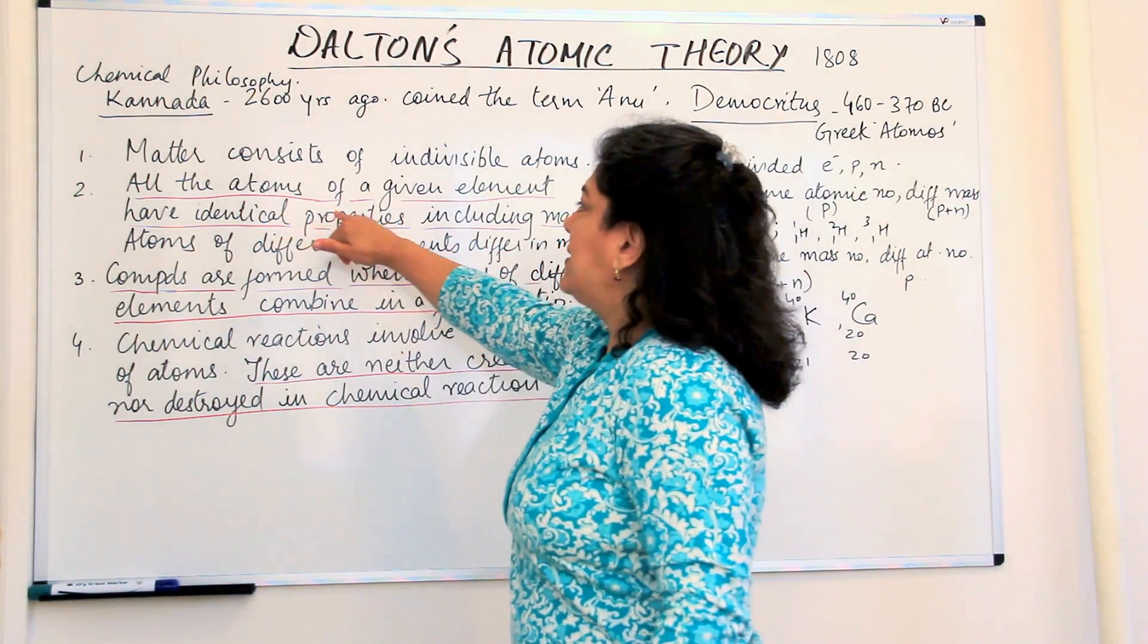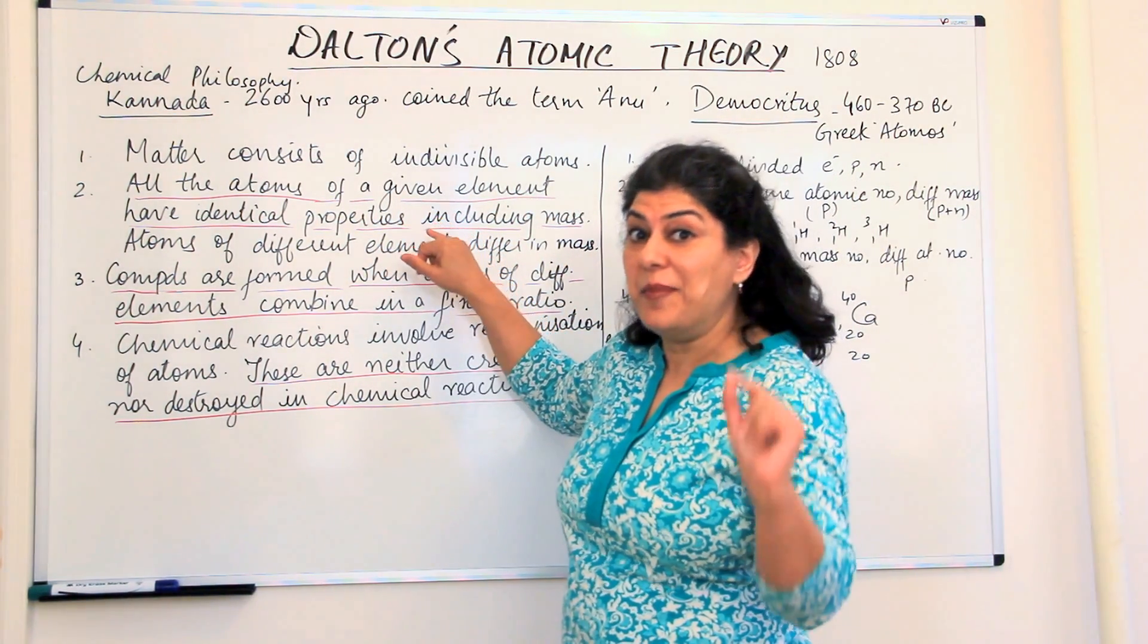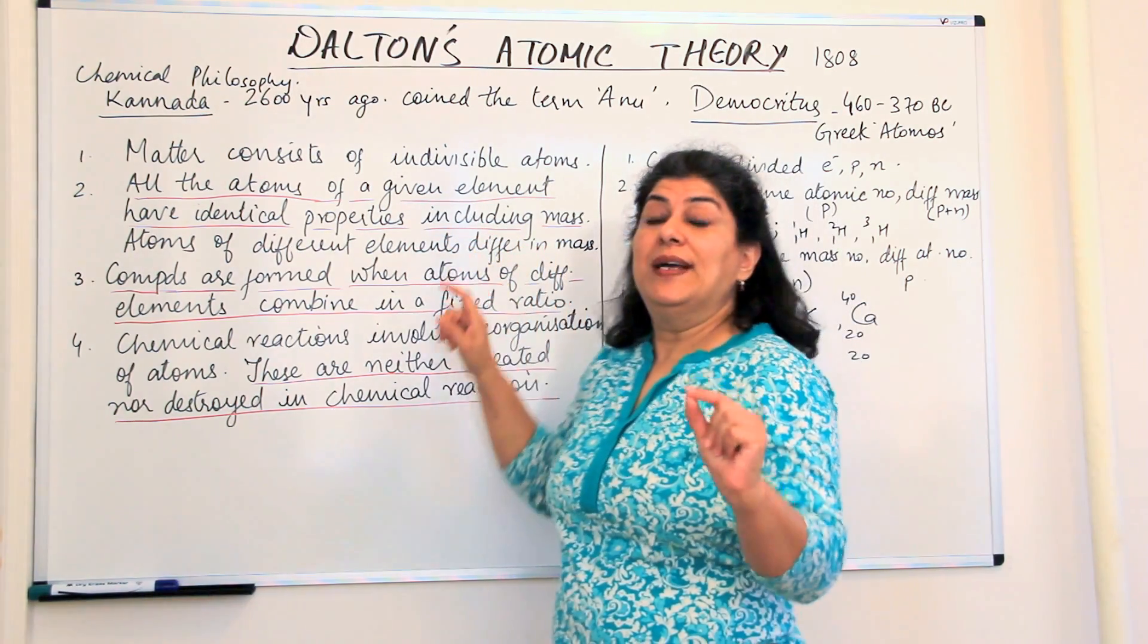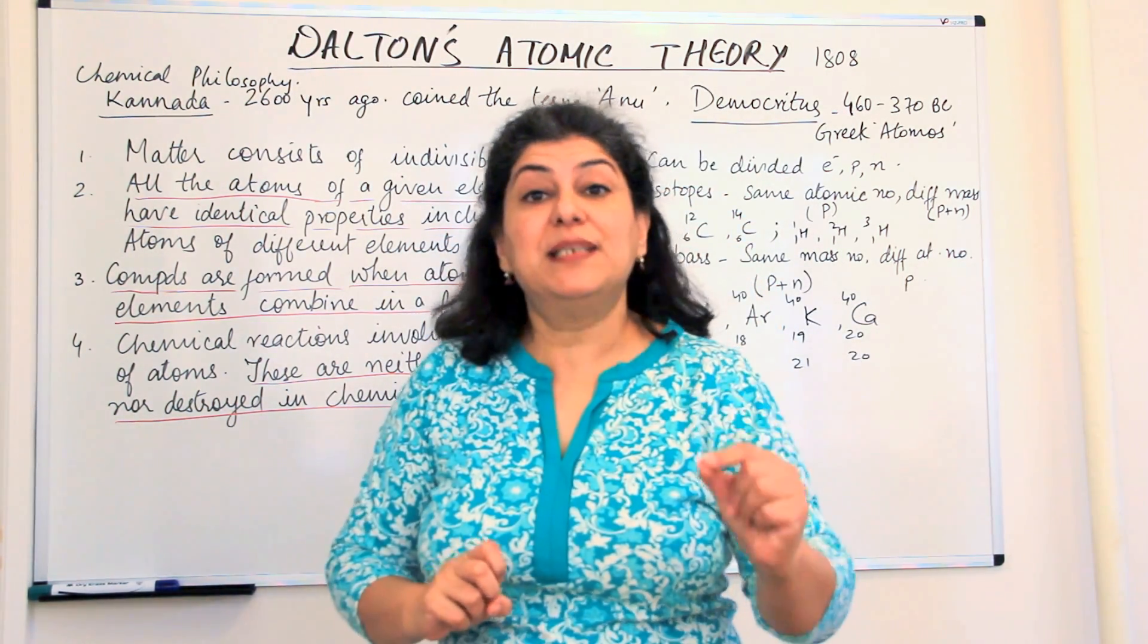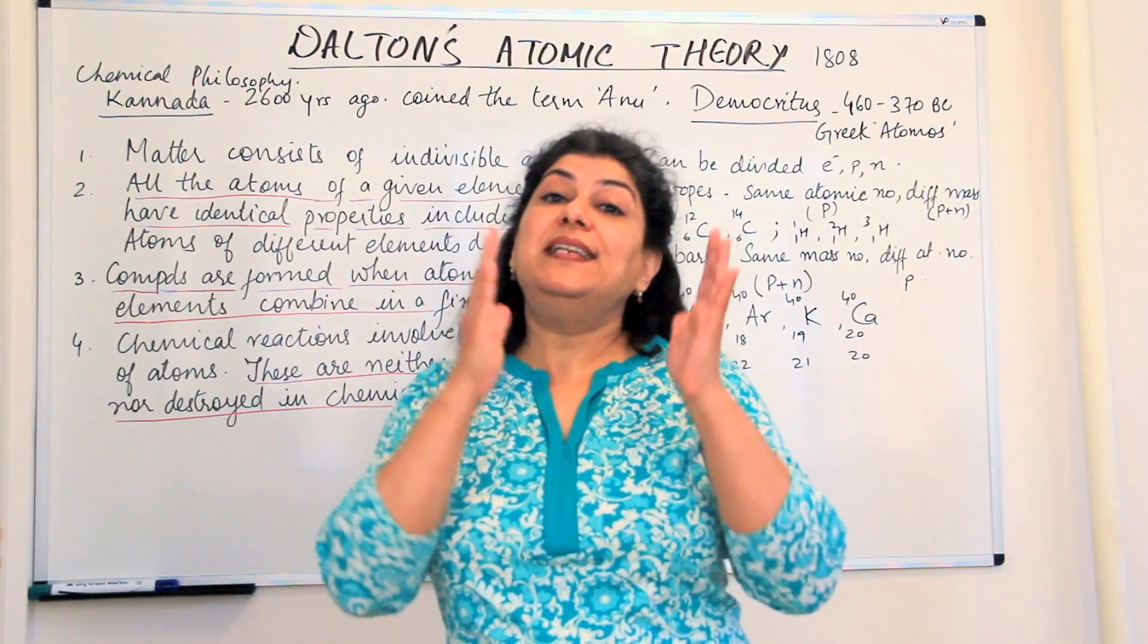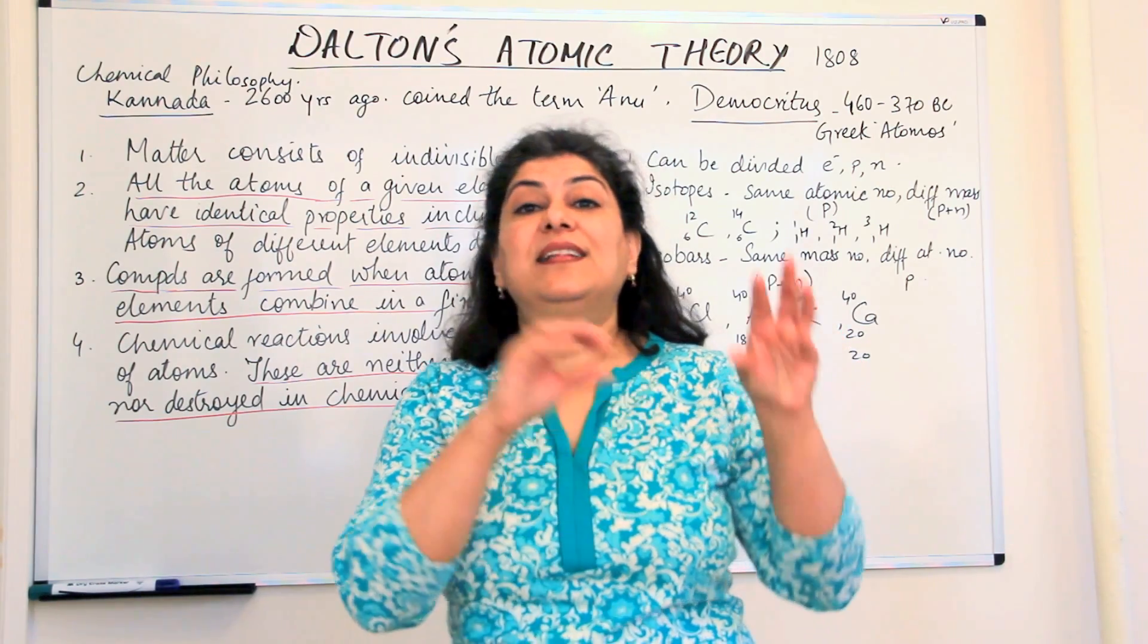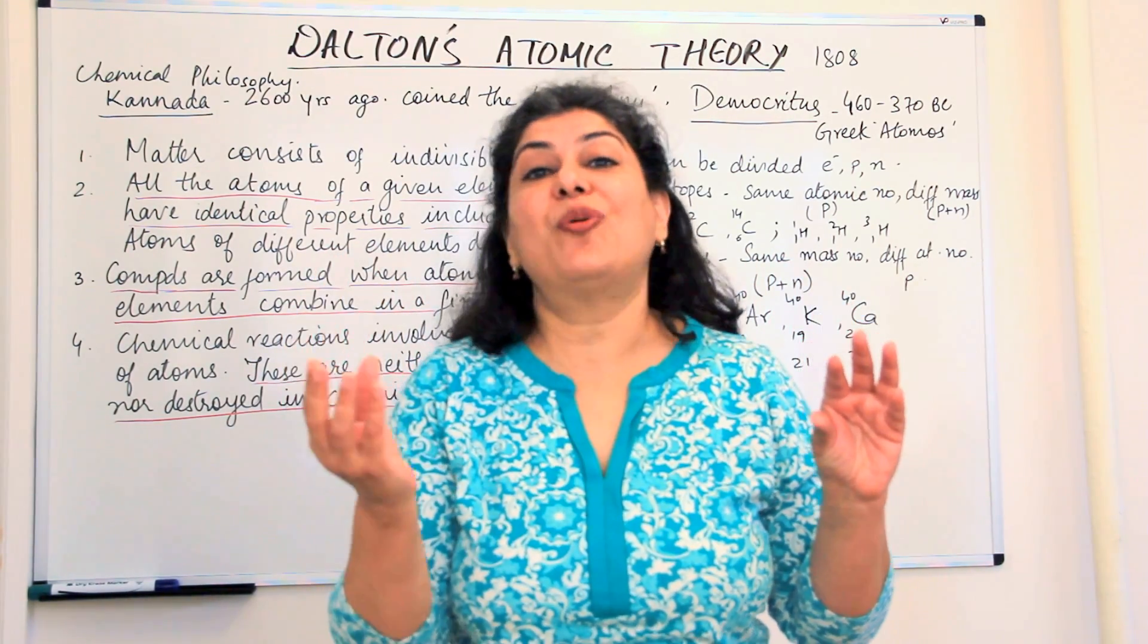All the atoms of a given element have identical properties including mass. Today, we know that atoms of the same element can contain different masses because the identity of an element is not the mass of the element, the identity of the element is the atomic number.